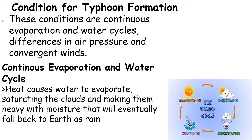That is the water cycle: heat causes water to evaporate, the water goes up to the atmosphere and forms into a cloud, the clouds become thicker because they are condensed or saturated, and then they start to precipitate — and that is why there is already rain.